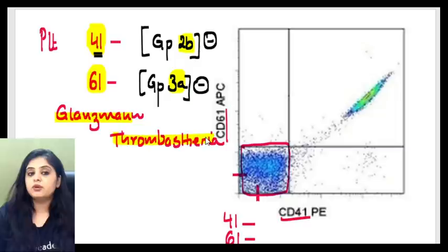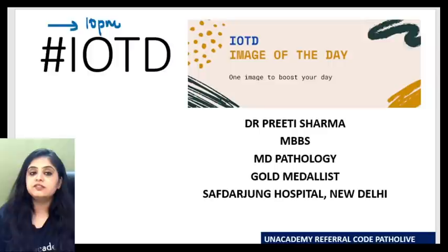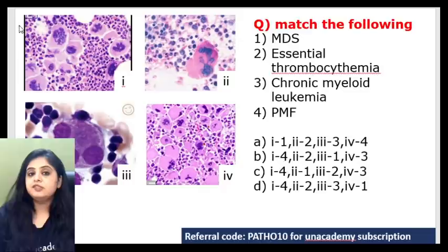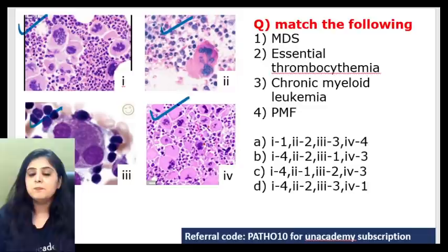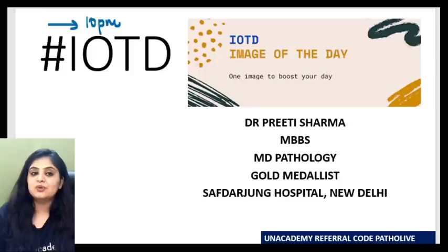Tomorrow's ninth IOTD will cover disorders related to megakaryocytes. Your homework is to identify where four different variations of a megakaryocyte (numbered 1, 2, 3, and 4 in the image) are seen in which particular disorders. We'll discuss these with beautiful mnemonics in tomorrow's class again at 10 o'clock.